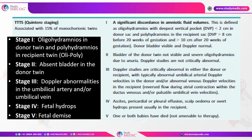In Stage 2, Doppler studies are still normal. If Doppler studies become critically abnormal — typically abnormal umbilical artery Doppler in either the donor or recipient — it becomes Stage 3, which manifests Doppler abnormalities in the umbilical artery or vein. When the recipient twin develops features of hydrops such as ascites, pericardial effusion, pleural effusions, or scalp edema, it becomes Stage 4. If fetal demise occurs in either twin, it becomes Stage 5, which is not amenable to therapy. This staging of TTTS is very important.